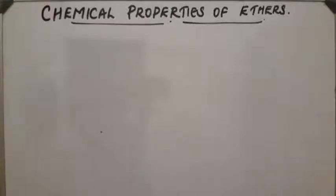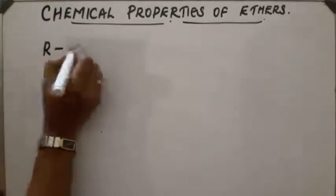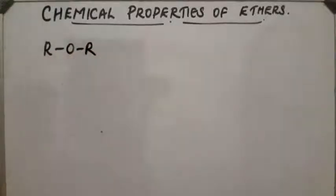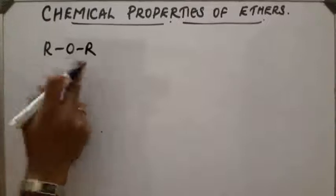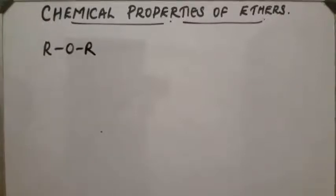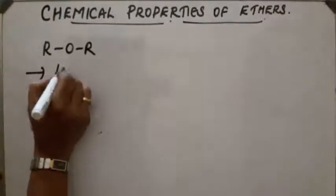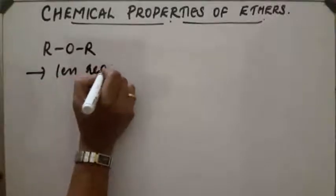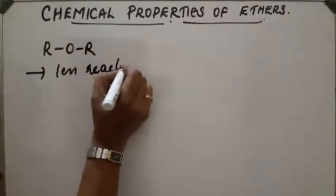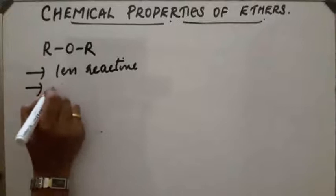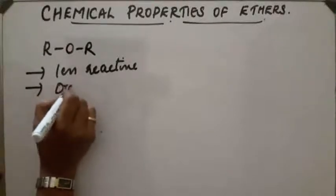Chemical properties of ethers. Ethers have the general structure R-O-R. The ether linkage is highly strong, so they are less reactive functional groups. They react only under drastic conditions.